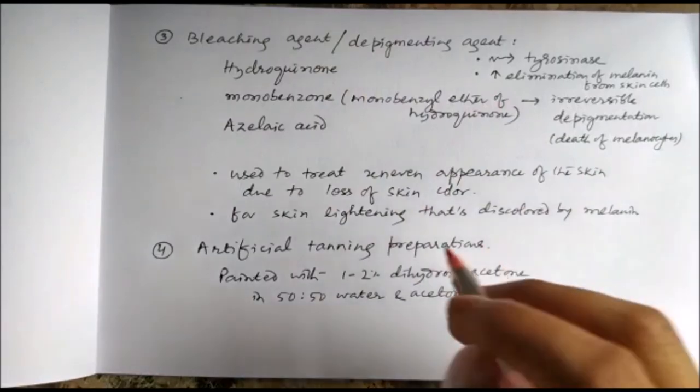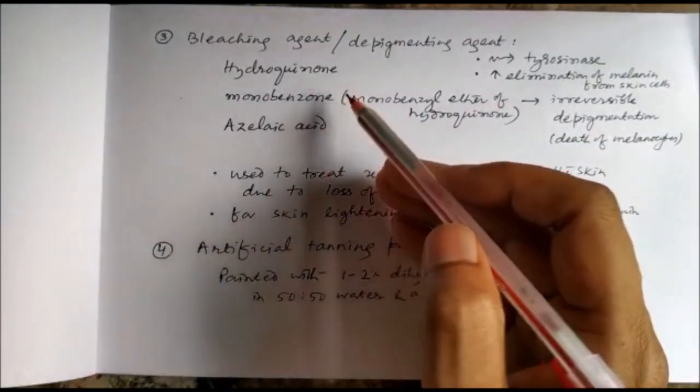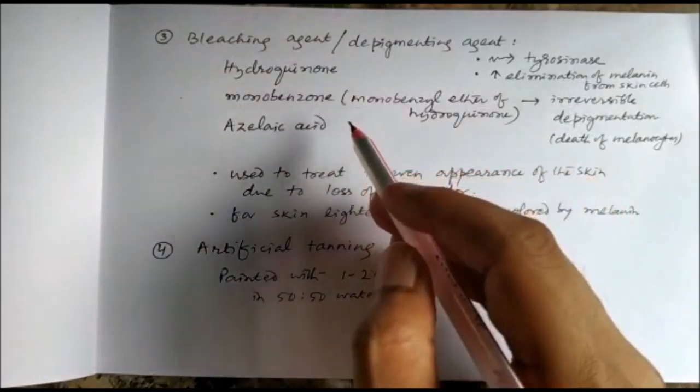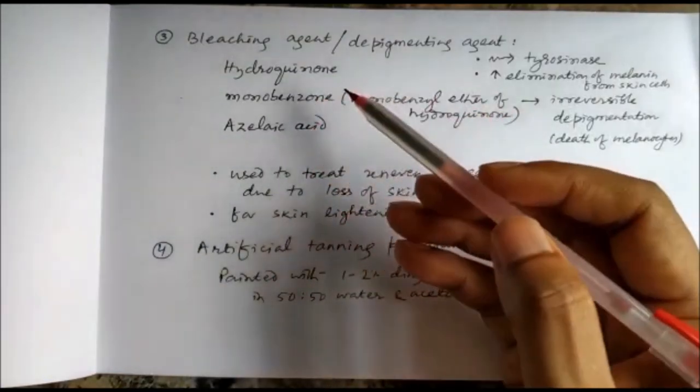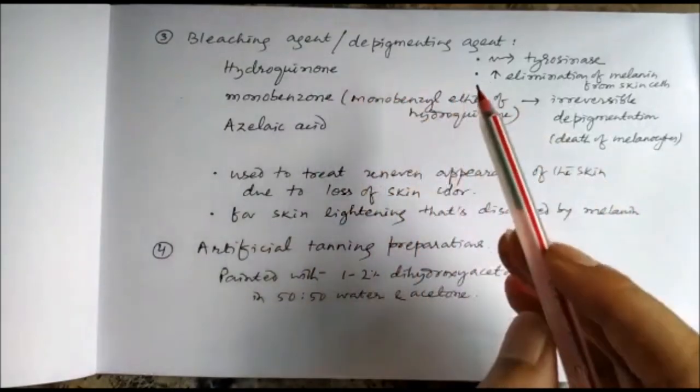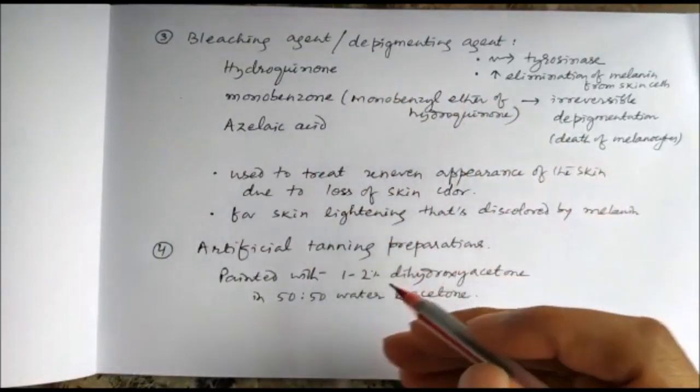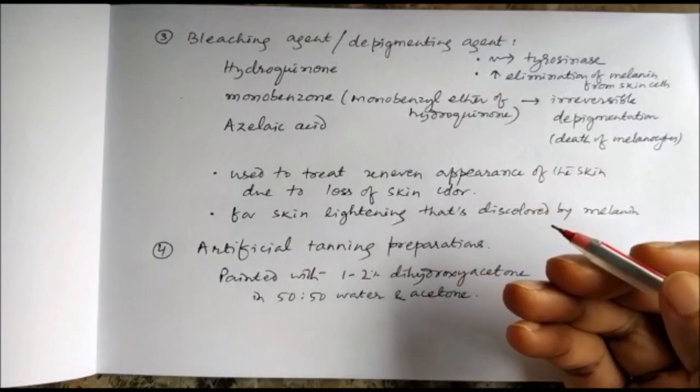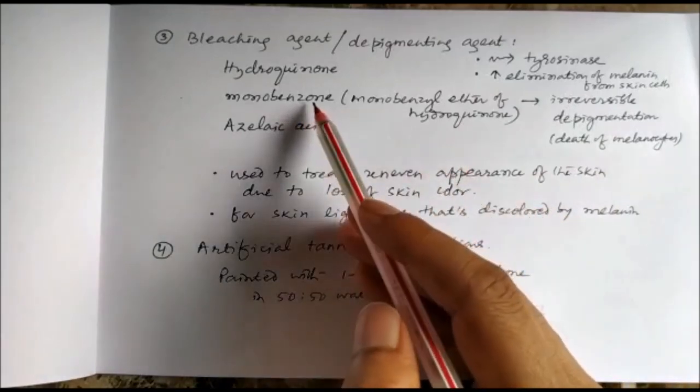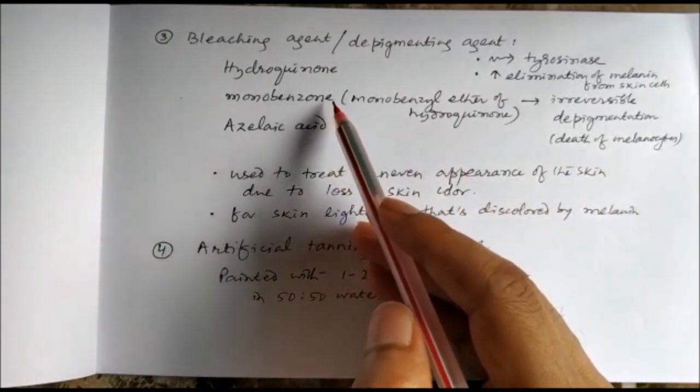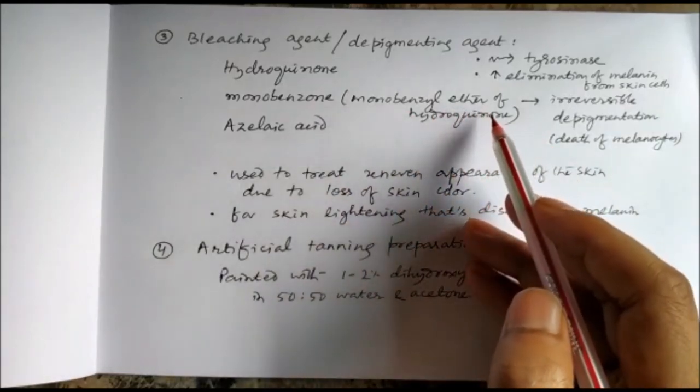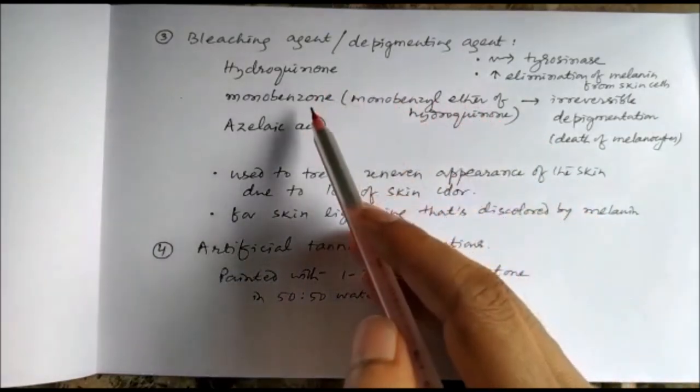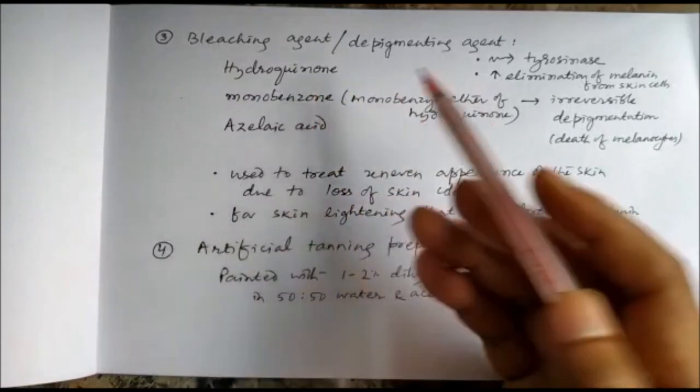Agents that are discolored by melanin include hydroquinone, monobenzone (which is a derivative of hydroquinone), and azelaic acid. They inhibit tyrosine and increase the elimination of melanin. Monobenzone increases the elimination of melanin from skin cells and can cause irreversible depigmentation because it is associated with death of the melanocytes.